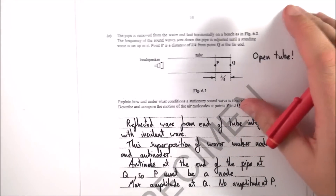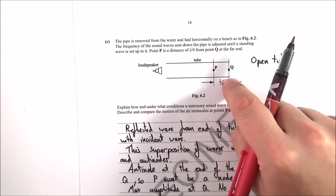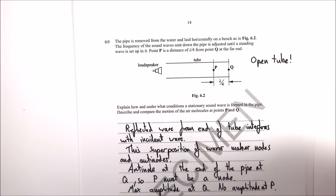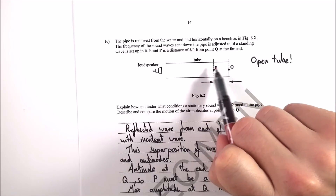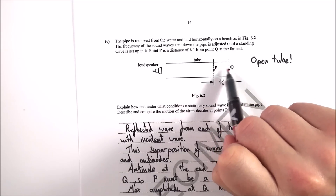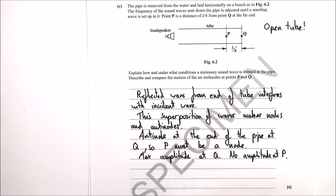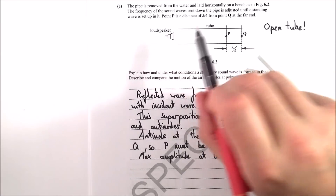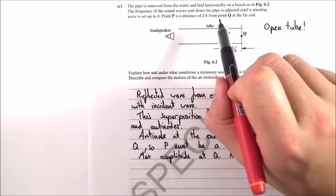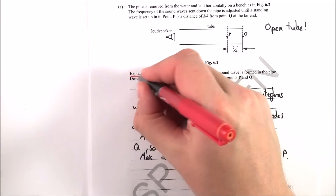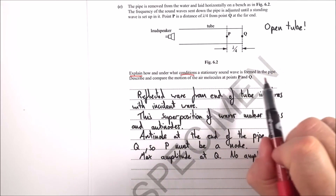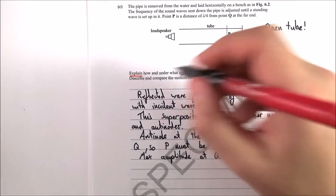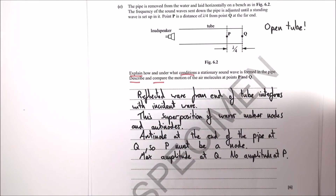Part c involves an open tube with points p and q, with a quarter of a wavelength between them. Between two anti-nodes or two nodes is half a wavelength, so if p and q are a quarter-wavelength apart, one must be an anti-node and the other a node. The question asks how a stationary wave is formed and asks you to describe and compare the motion of air molecules at p and q.